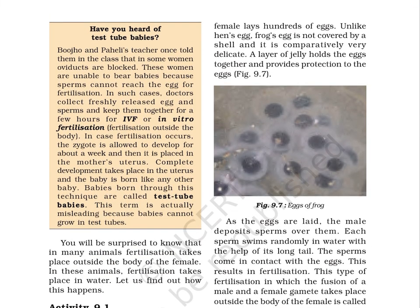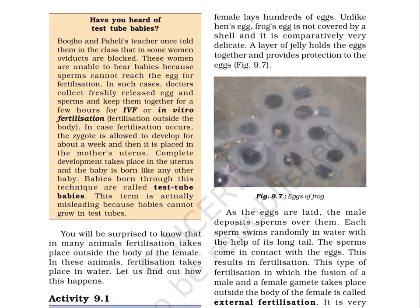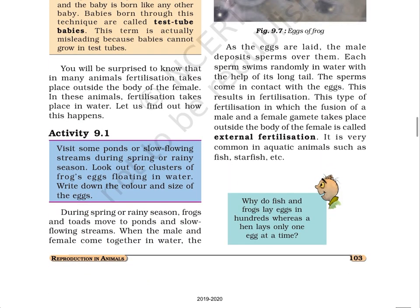Page 103. Have you heard of test tube babies? In some women, oviducts are blocked. These women are unable to bear babies because sperms cannot reach the egg for fertilization. In such cases, doctors collect freshly released egg and sperms and keep them together for a few hours for IVF or in vitro fertilization — fertilization outside the body. In case fertilization occurs, the zygote is allowed to develop for about a week and then it is placed in the mother's uterus. Complete development takes place in the uterus and the baby is born like any other baby. Babies born through this technique are called test tube babies, though this term is misleading because babies cannot grow in test tubes.